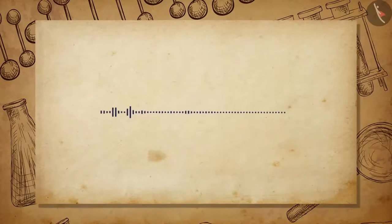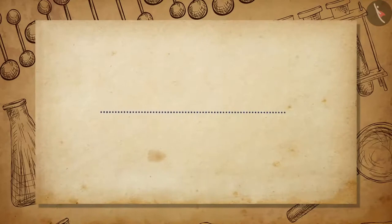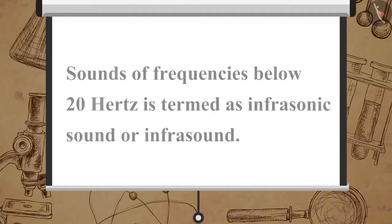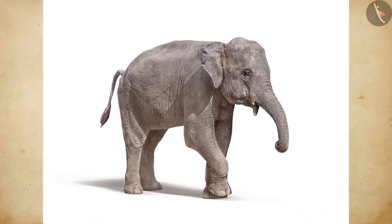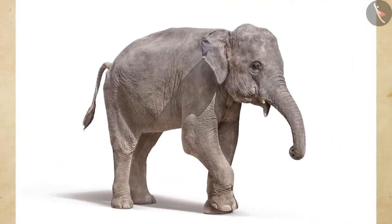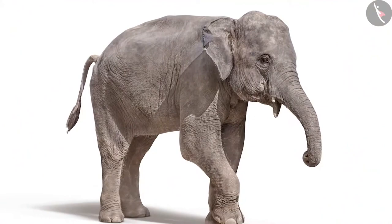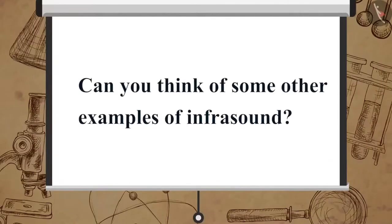Now let us learn about the low range of sound which is not audible to human beings. Sounds of frequencies below 20 Hz are termed as infrasonic sound or infrasound. Elephants also produce sound in the infrasound range.